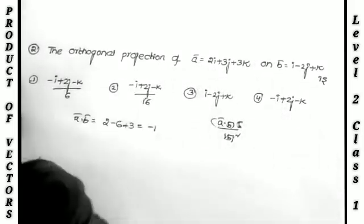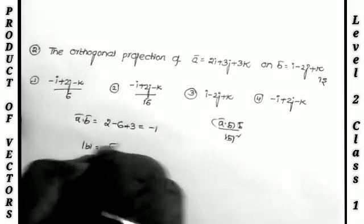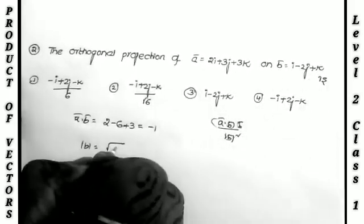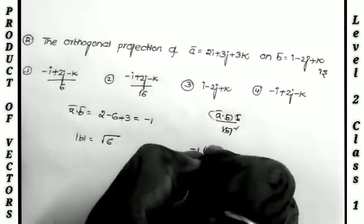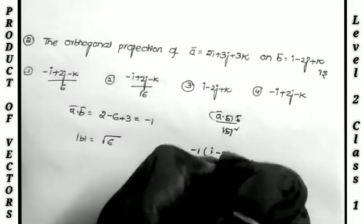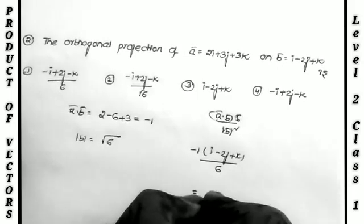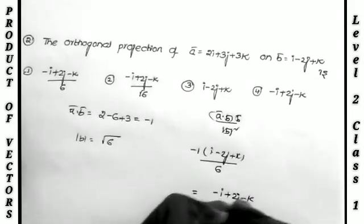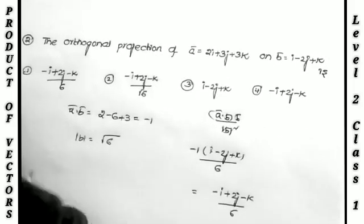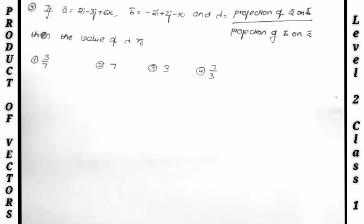a·b = 2 − 6 + 3 = −1. Magnitude |b| = √(1 + 4 + 1) = √6, so |b|² = 6. Substituting: (−1)·(i − 2j + k)/6 = (−i + 2j − k)/6, which is the first option.